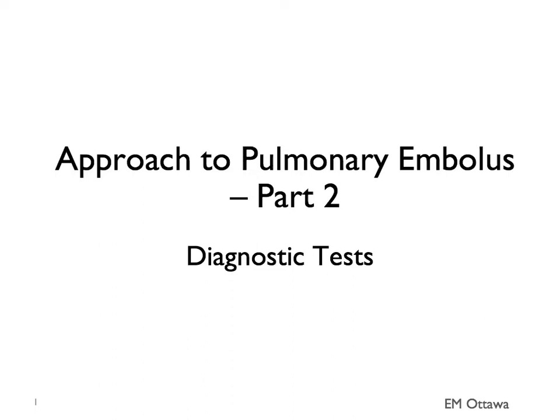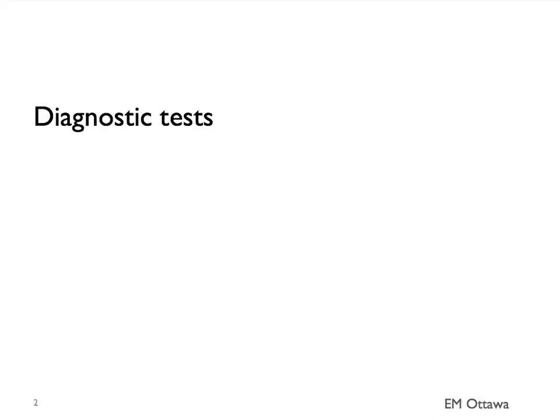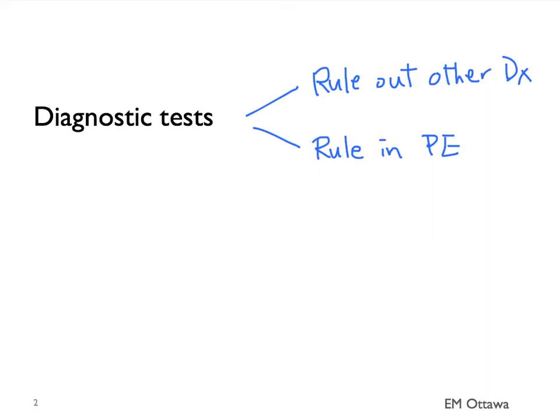Welcome to Approach to Pulmonary Embolism, Part 2. In this section, we'll talk about the available diagnostic tests for PE. In Part 3, we will talk about how we put it all together. We're hoping to do one of two things with the diagnostic tests: those that help us rule out other diagnoses, and those that help us rule in PE, or confirmatory tests.